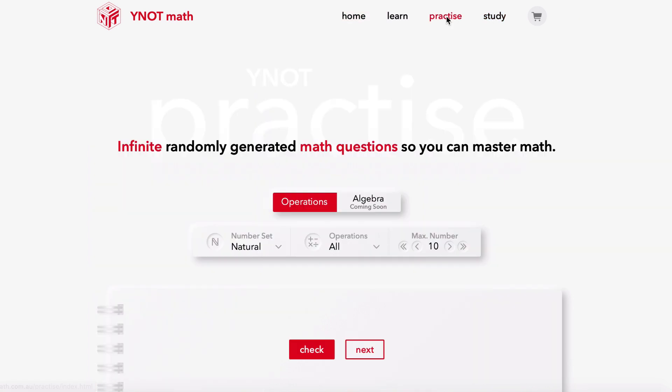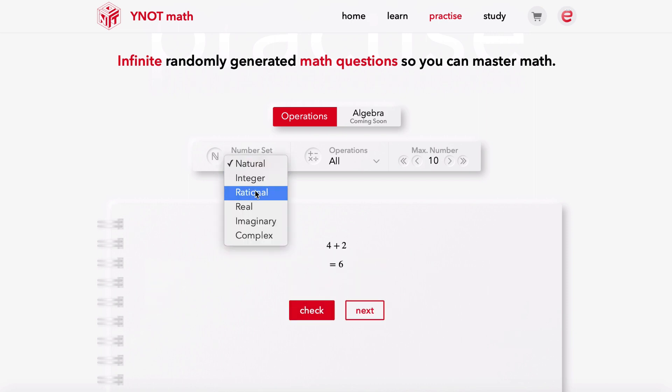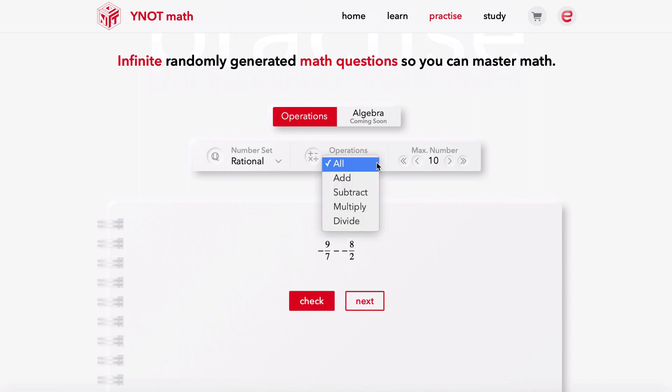Visit the practice page to test out your operation skills. Do a question and use the check button to see if your answer is correct. Change your number set, change your operation or change the maximum number in a question. Here you'll find an infinite amount of randomly generated questions.